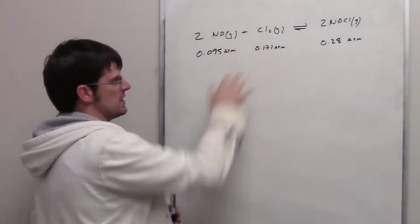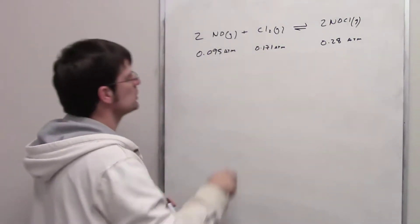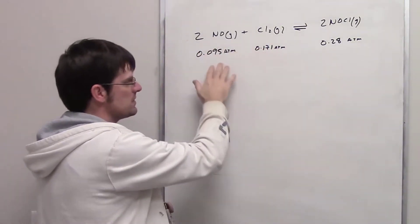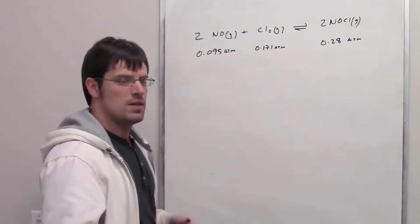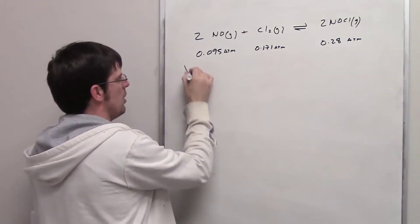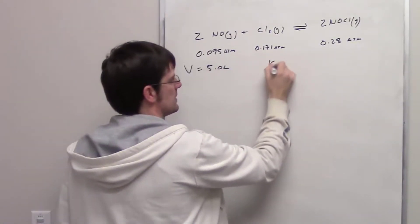This question gives us this equilibrium reaction. It also informs us that at equilibrium, the partial pressures of each of these substances are these numbers here. It then goes on to say that if this vessel has a volume of 5 liters, then what is Kc at this temperature?